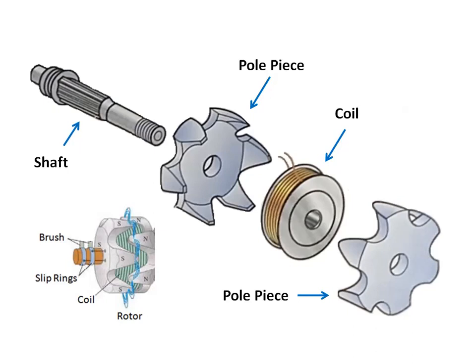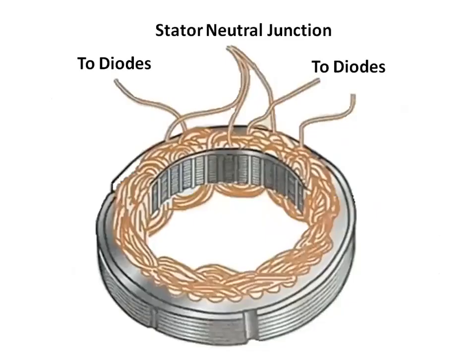In some alternators, both brushes are insulated and connected to the two alternator field terminals. In other alternators, one brush is grounded and the other brush is connected to a field terminal. The stator assembly contains three insulated windings, which are mounted in insulated stator frame slots.